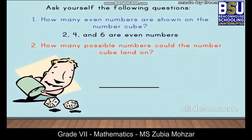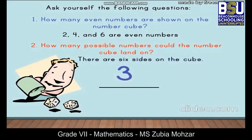How many possible numbers could the number cube land on? There are six possible outcomes. So the probability would be three out of six, and in percentage it would be 50 percent. Excellent!